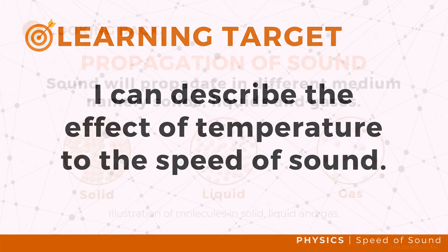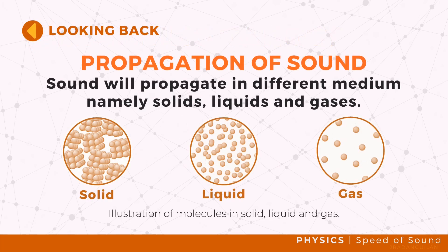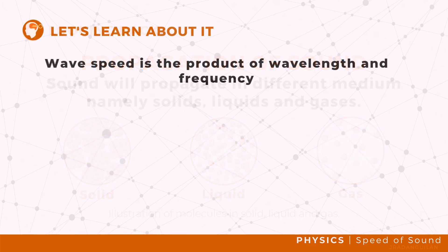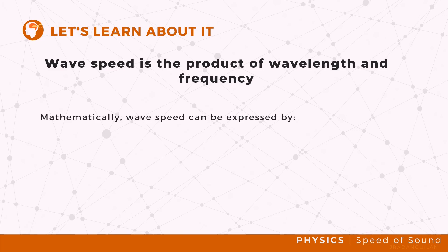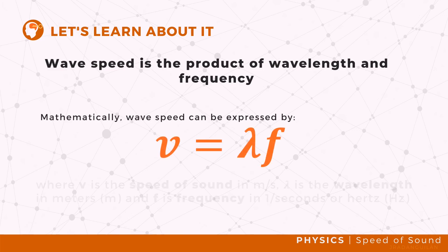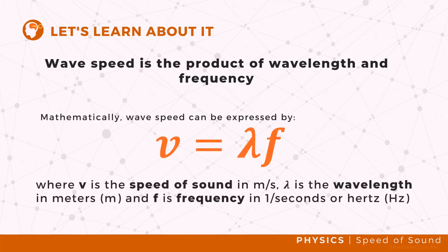From the previous discussion, you learned that sound propagates through different media. The speed of sound is described as the product of the wavelength and frequency. It can be expressed by V equals lambda F, where V is the speed of sound in meters per second, lambda is the wavelength in meters, and F is the frequency in hertz.